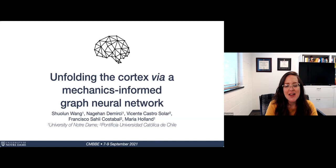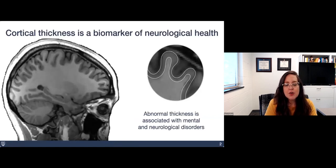Hi, I'm happy to be here today to talk about our work on a mechanics-informed graph neural network to unfold the cortex. In my research group, we're very interested in cortical thickness, which is the thickness of the outer cortical gray matter layer of the brain. This is an important biomarker of neurological health, and abnormalities in cortical thickness are associated with a number of different mental and neurological disorders, including autism spectrum disorder, epilepsy, and schizophrenia.